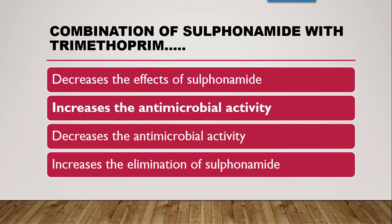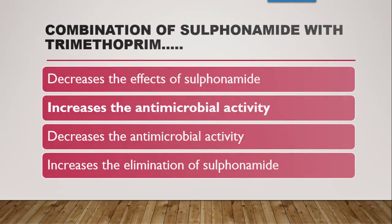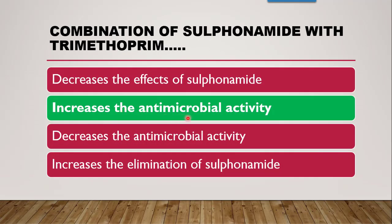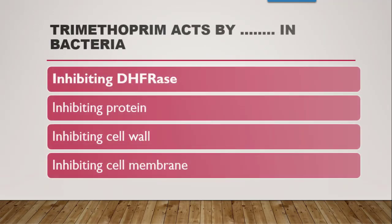The first question is: the combination of sulfonamide with trimethoprim will — decrease the effect of sulfonamide, increase the antimicrobial activity, decrease the antimicrobial activity, or increase the elimination of sulfonamide? The correct answer is they will increase the antimicrobial activity of sulfonamides.